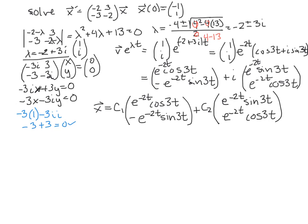So x at 0 is going to be C1 times, now I've got e^0 is 1, cos(0) is 1, e^0 is 1, sin(0) is 0, plus C2 times sin(0) is 0, cos(0) is 1. This is equal to [-1; 1].